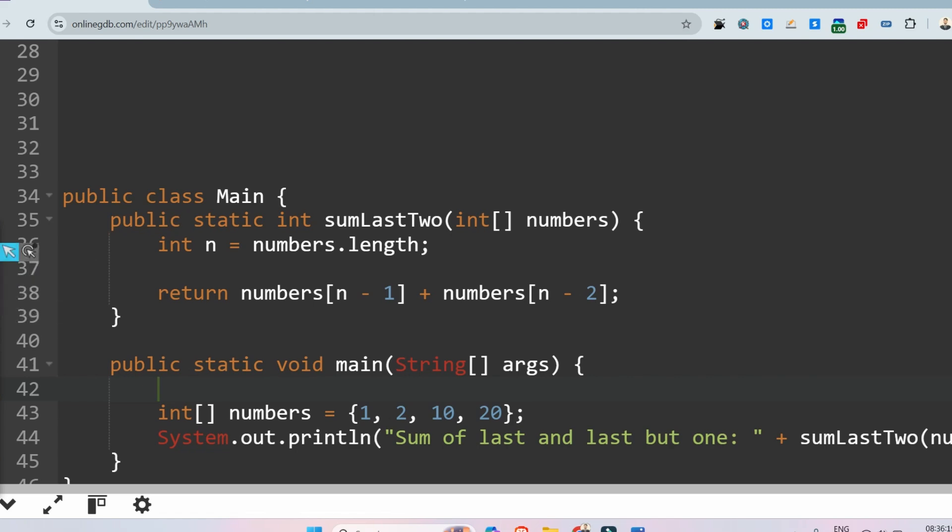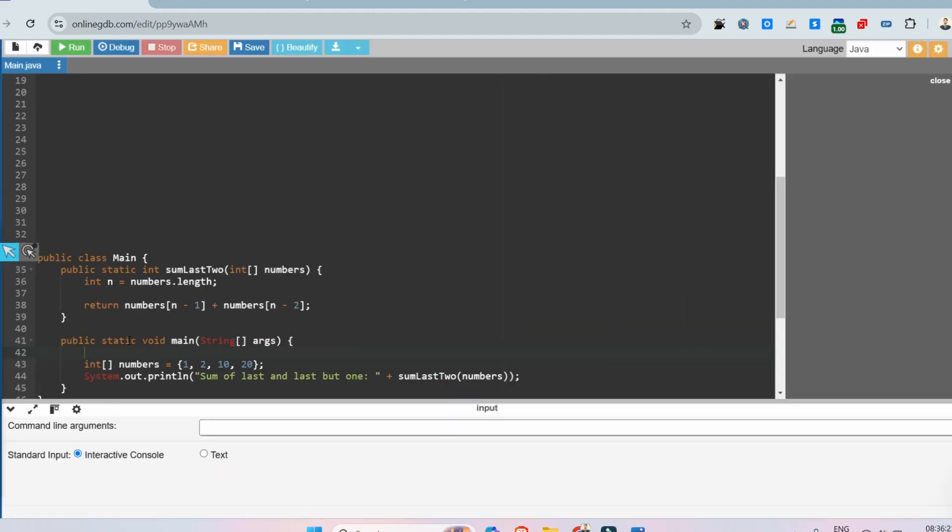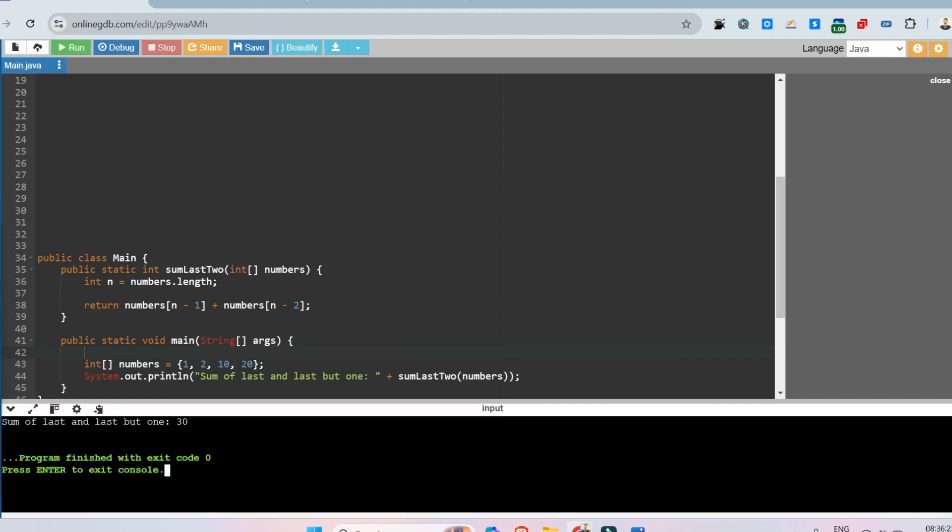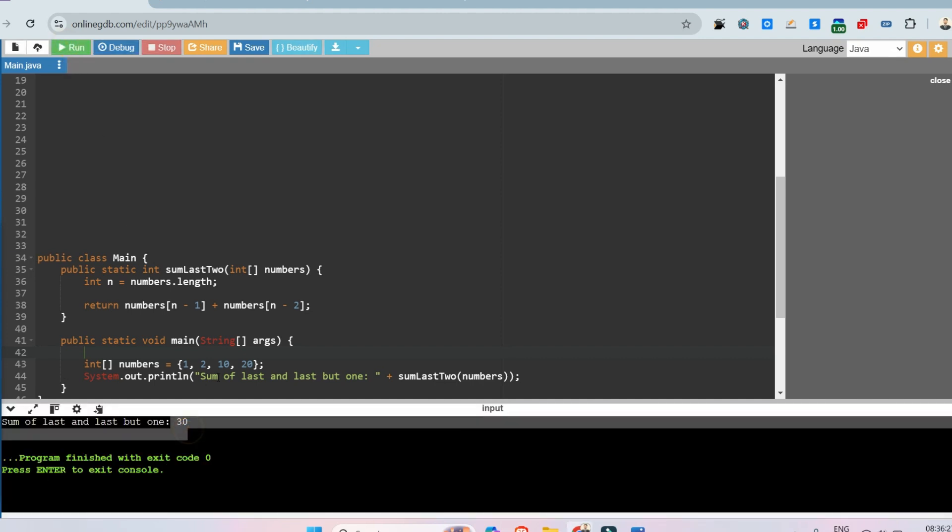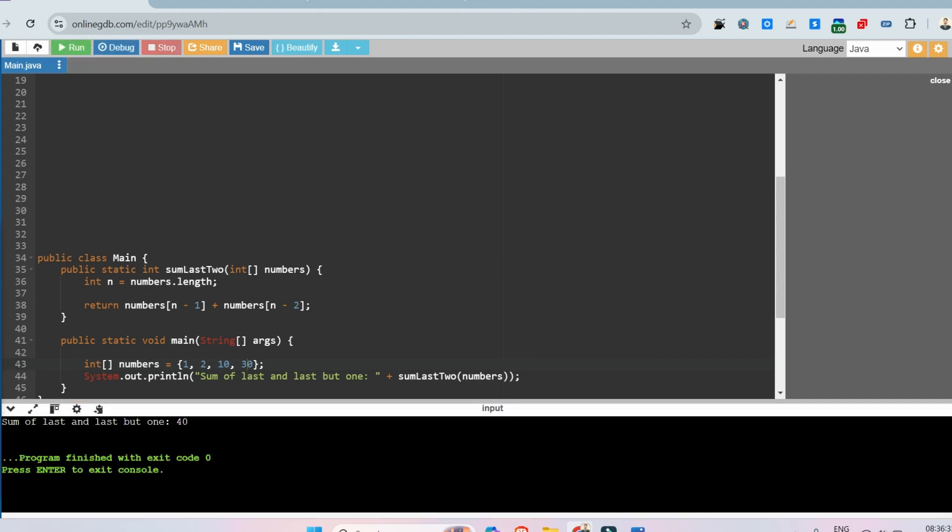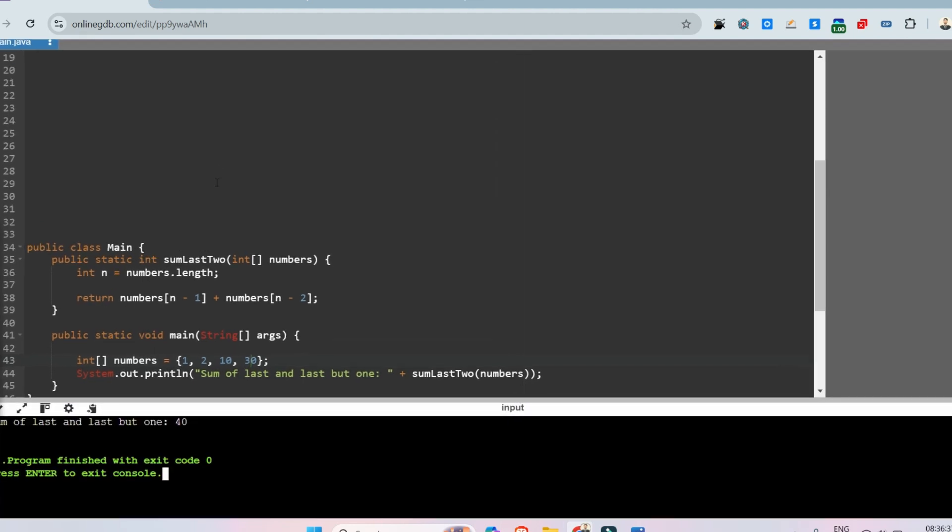I hope you understood. Let me just print that. Let me just run it. Output should be 30 in this case, and if we change this to 30, then output should be 40. So as expected.